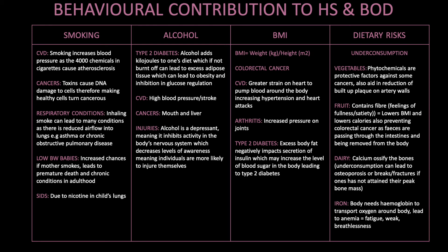Dietary risks — under-consumption. Vegetables: phytochemicals are protective factors against some cancers and aid in the reduction of built-up plaque on artery walls. Fruit: contains fibre which lowers BMI and caloric intake, also preventing colorectal cancer as faeces pass through and are removed from the intestines. Dairy: calcium ossifies the bones, and under-consumption can lead to osteoporosis or fractures if peak bone mass is not attained. Iron: the body needs haemoglobin to transport oxygen around the body; a deficiency in iron can lead to anaemia, with symptoms including fatigue, feeling weak and breathlessness.